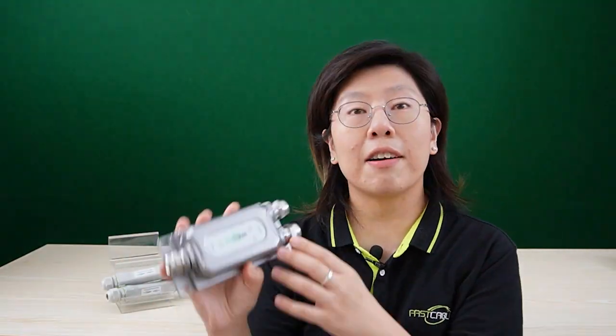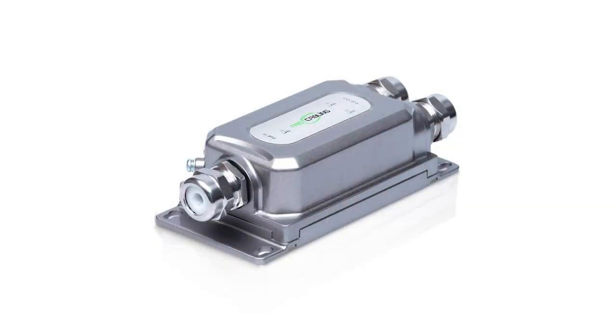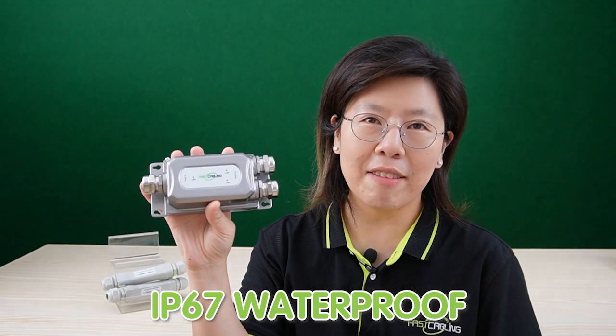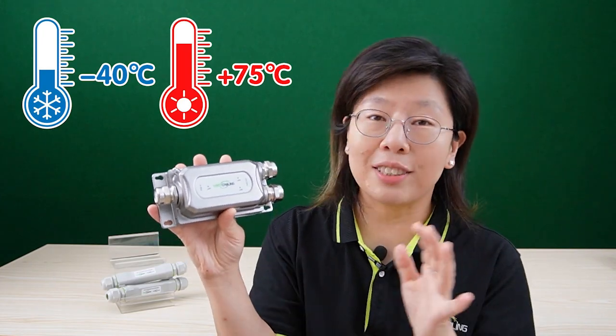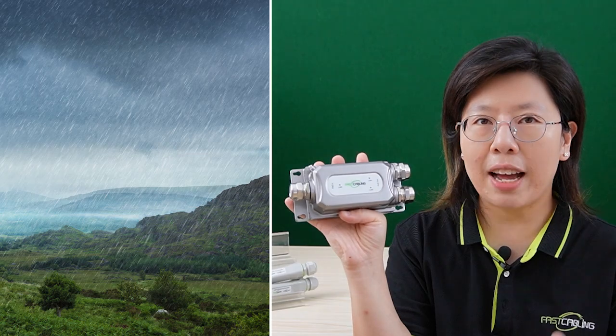Next, let me introduce you to our metal housing 90W PoE extender. This one here is also IP67 waterproof rated. Of course, the working temperature ranges from minus 40 degrees up to 75 degrees. Perfect to work in a harsh environment.